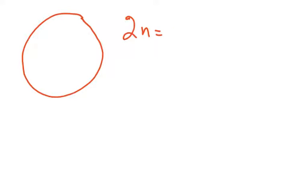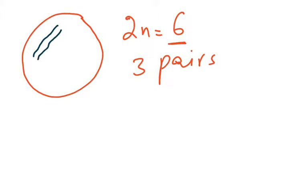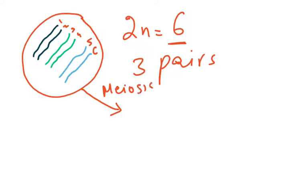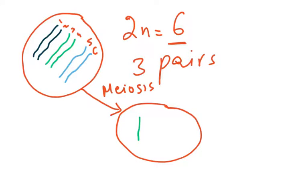Now when we talk of half the number of chromosomes, say this is a cell and 2N is equal to 6. By 6 I mean not 6 individually different chromosomes but 3 pairs. I am showing you the 3 pairs with different colours — there is a green pair, there is a black pair, and there is a blue pair, so the 6 are complete. When by meiosis a cell is going to be formed, it is only going to have 1 of each pair — so 1 green, 1 black, and 1 blue. And this would be the nucleus of this cell.